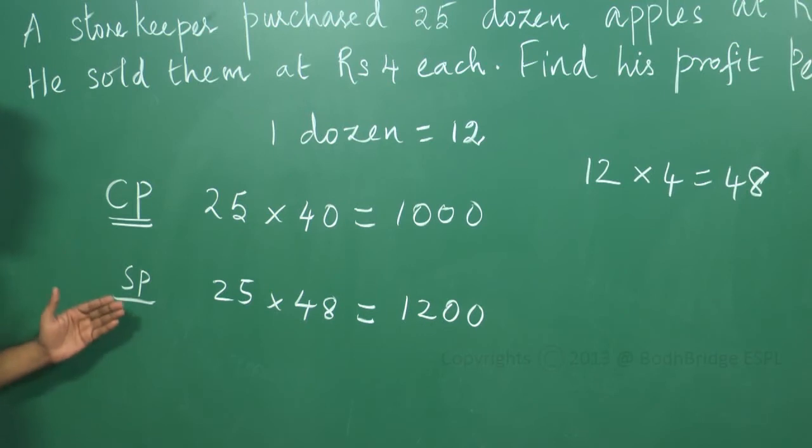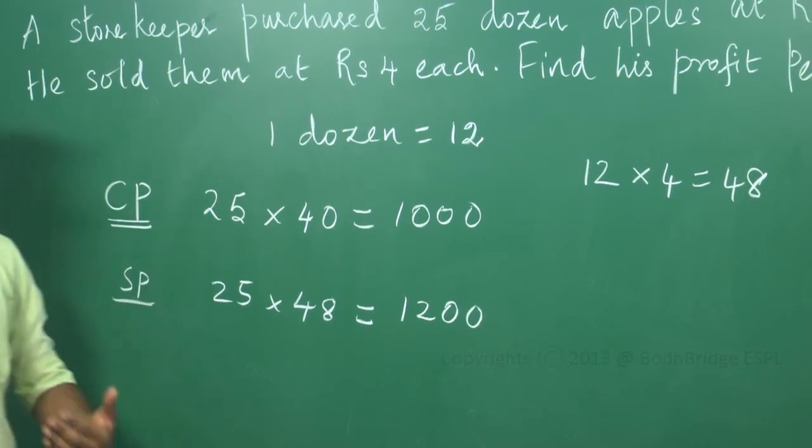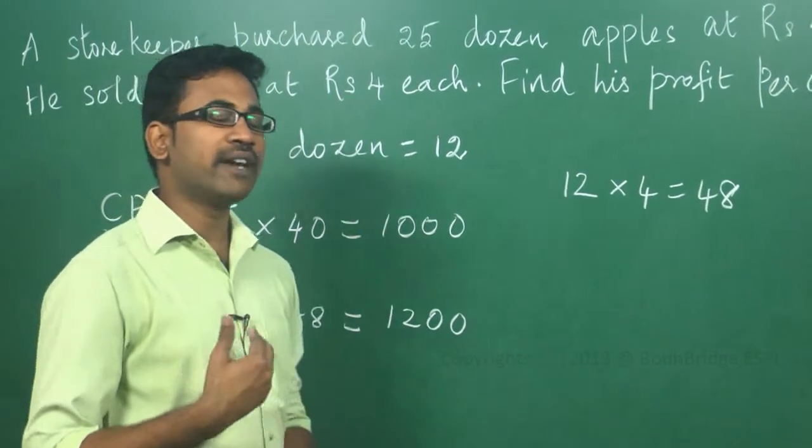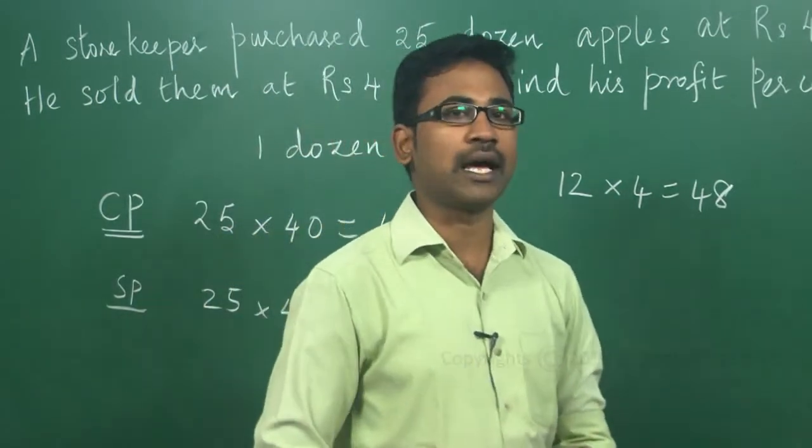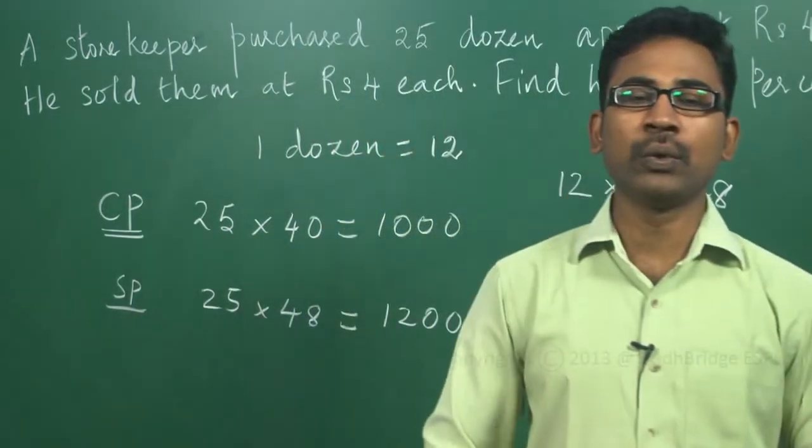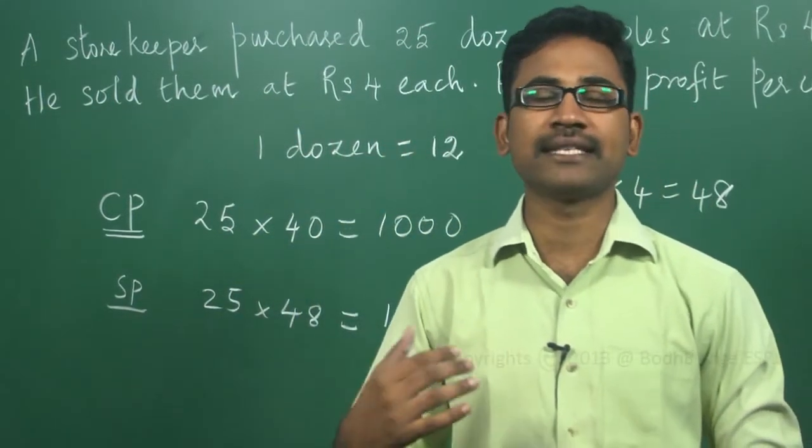Now, I got the cost price. Now, I got the selling price. We know how to calculate the profit percentage. I'll recollect the profit percentage formula. Profit percentage is equal to SP minus CP divided by CP into 100.